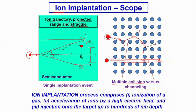The total ion implantation process has three important elementary steps. First is ionization of the species we want to implant. Then acceleration of the species — as we introduce them into the chamber we need to accelerate them to very high velocity by application of a very high electric field, of the order of a few keVs to MeVs. And finally, injection or implantation onto the surface, which can typically be a few tens to a few hundreds of nanometers — certainly not more than a micrometer.